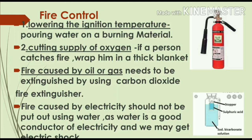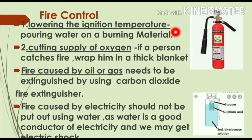For example, the first method is lowering the ignition temperature. By lowering the ignition temperature we can put out fire. Just as the paper cup with water did not catch fire because it could not reach its ignition temperature, similarly, when something is burning, we can pour water over it to lower its temperature and put out the fire.